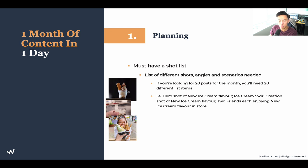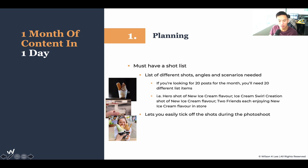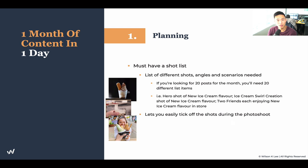For example, a hero shot of a new ice cream flavor — write that down and find a sample reference image. That becomes your shot list. Ice cream swirl creation shot of a new ice cream flavor — same thing, write it down and find a reference picture. Friends each enjoying a new ice cream flavor in store — you can see this displayed very well here. By identifying these from the get-go and having a list, you can easily check off shots during the photo shoot so you know you're not missing anything.